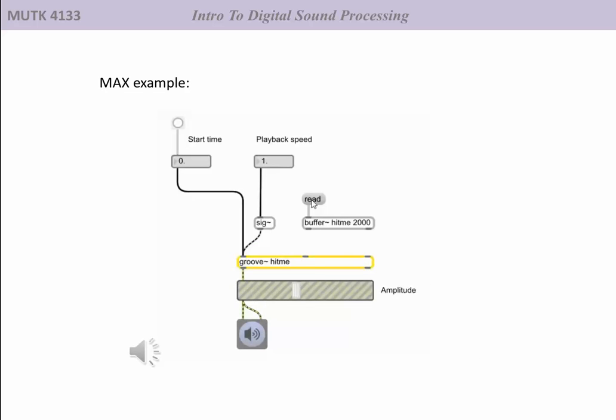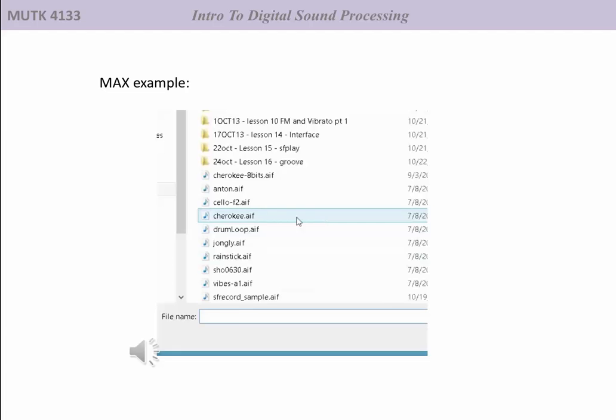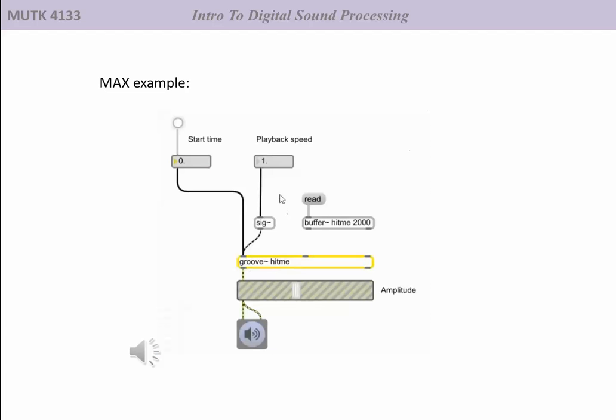For this example, I'm going to use the Cherokee sound file because it's really easy to tell with speech where we're at with the file. I'm going to give it a normal playback speed, 1.0, and start time of 0. That should give me 2000 milliseconds of Cherokee speech.